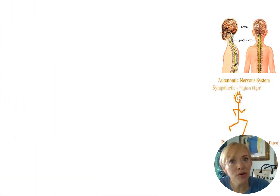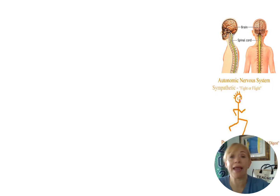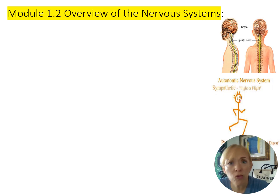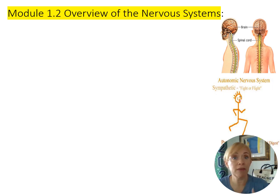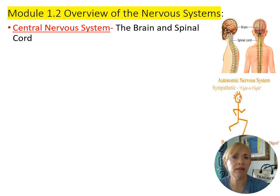You have the central nervous system versus the peripheral nervous system. The central nervous system is your brain and spinal cord — it's the center of everything. The peripheral nervous system is everything outside of that. Within the peripheral nervous system, you have the somatic nervous system — soma means body — which controls voluntary muscle movements.